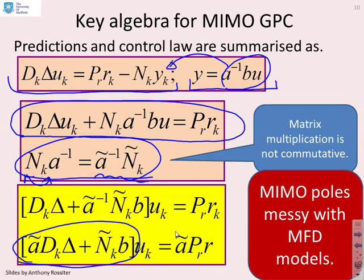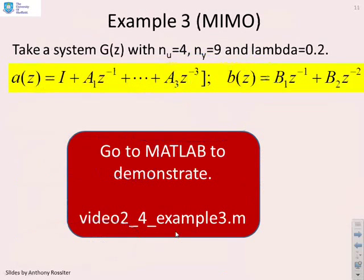Basically, MIMO poles are messy with matrix fraction description models. So we'll give an example just to show that if you exclude calculating the poles, otherwise things are straightforward.